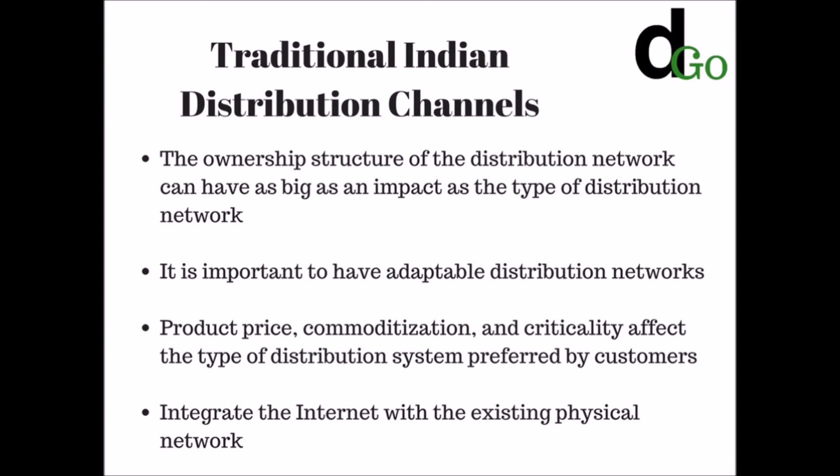In traditional Indian distribution channels, owners play a big role and have a significant impact on the distribution network, and middlemen are well-known intermediaries. Integrating the internet with existing physical networks is very important — for example, in agriculture, farmers have large farms and generate many crops but cannot sell at prices they want due to the presence of middlemen. If markets are moved online, buyers can purchase crops directly from farmers, helping farmers generate higher revenue and giving customers lower prices.